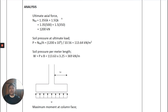In the analysis, the first step is to calculate the ultimate axial force: N_Ed = 1.35 G_K + 1.5 Q_K = 1200 kN. Next, the soil pressure at ultimate load is P = N_Ed / A = 1200 × 10³ / (3.25 × 3.25) = 113.64 kN/m². The soil pressure per metre length is 113.63 × 3.25 = 369 kN/m.